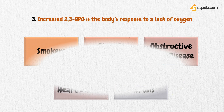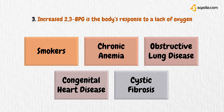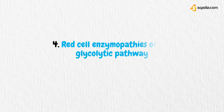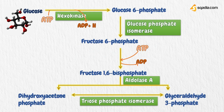Thirdly, 2,3-BPG has been found in increased concentrations in smokers, chronic anemia, obstructive lung disease, congenital heart disease, and cystic fibrosis, probably as compensation for the damaged organs. Lastly, inherited disorders resulting in deficiency of red cell glycolytic enzymes are rare causes of hereditary non-spherocytic hemolytic anemia, which can be dangerous because red blood cells are completely dependent on glycolysis to produce both ATP and 2,3-BPG.